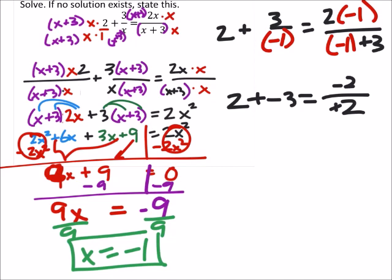No, 2. It's positive 2. Sorry. And 2 plus negative 3 is negative 1 equals negative 2 divided by 2 is negative 1. So our answer checks off, and it does work.